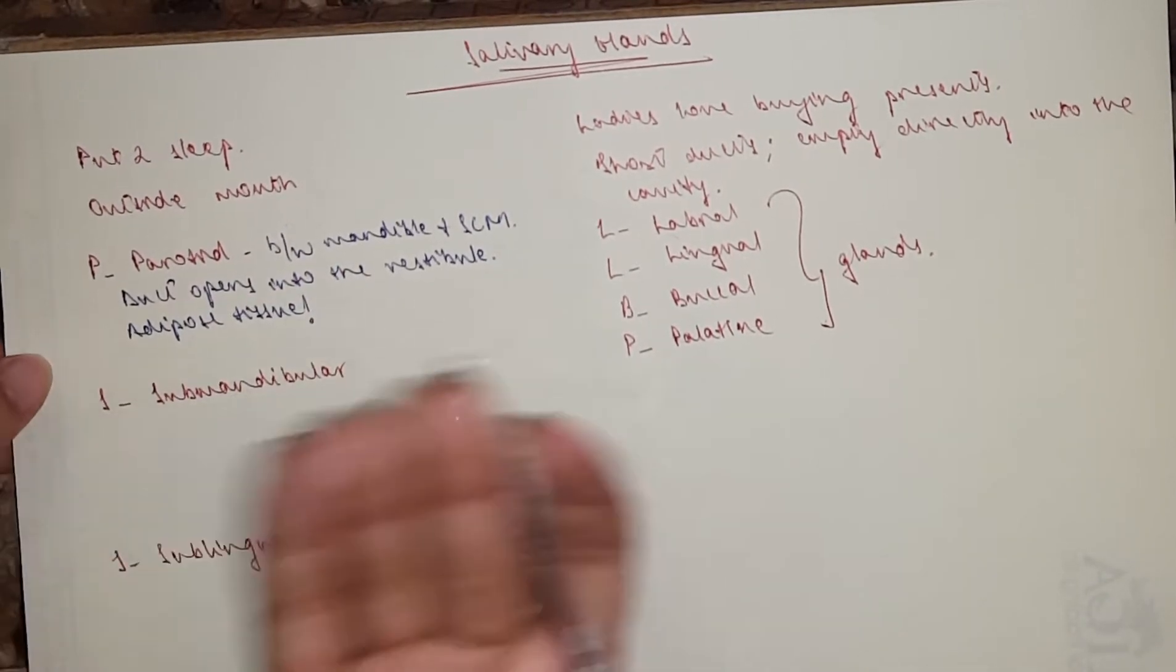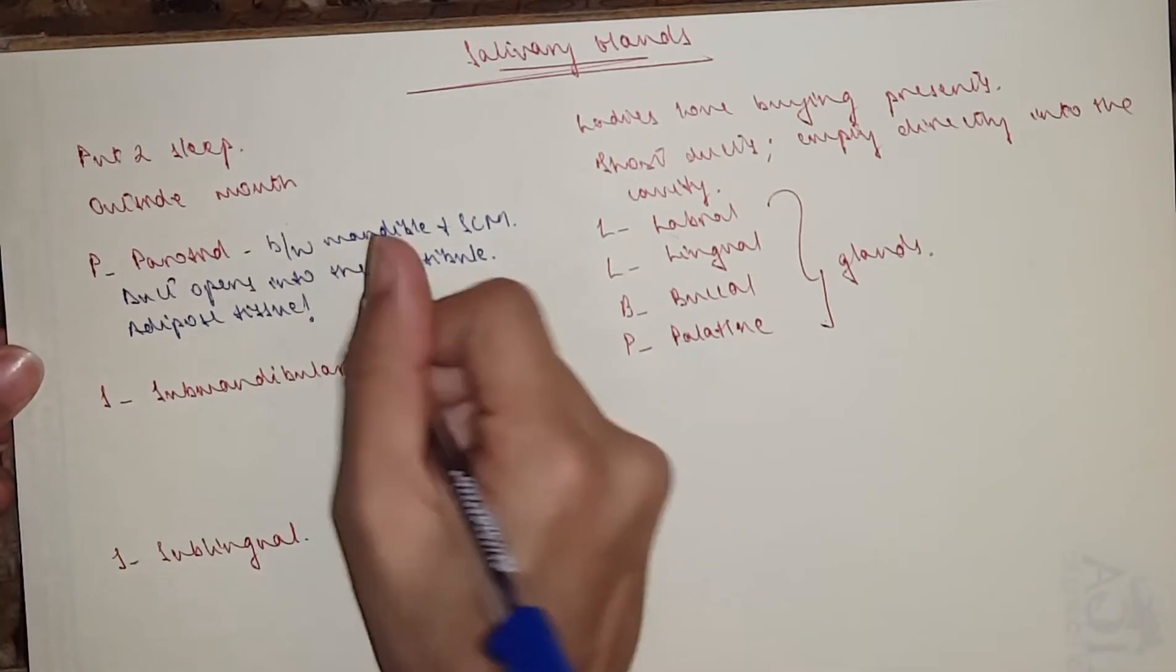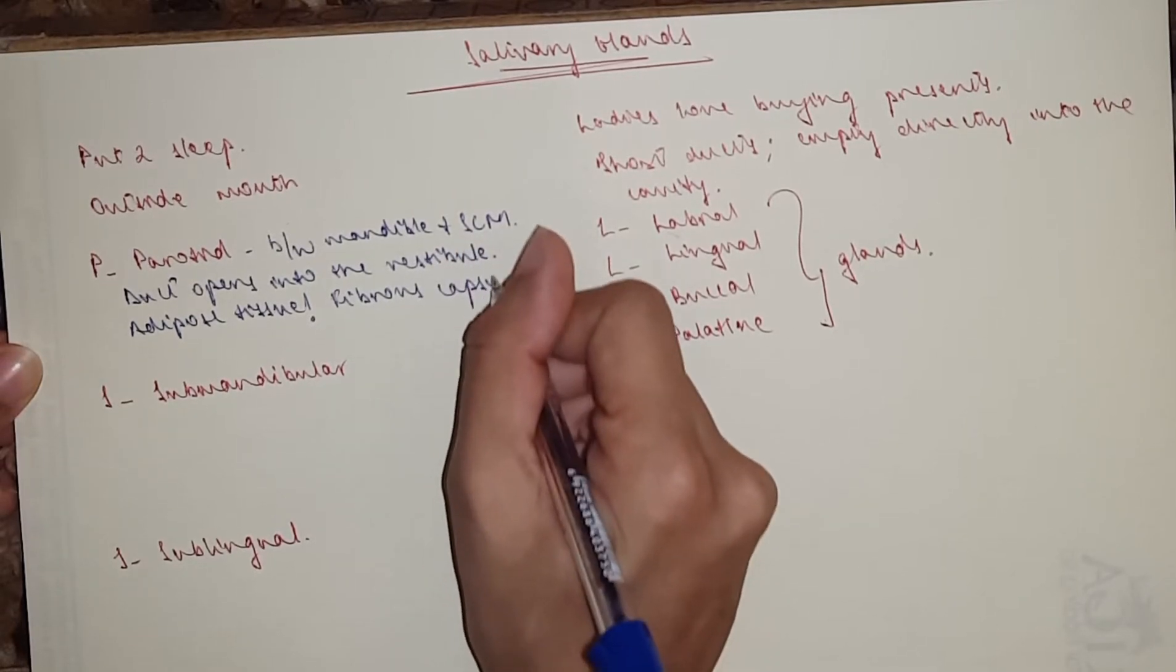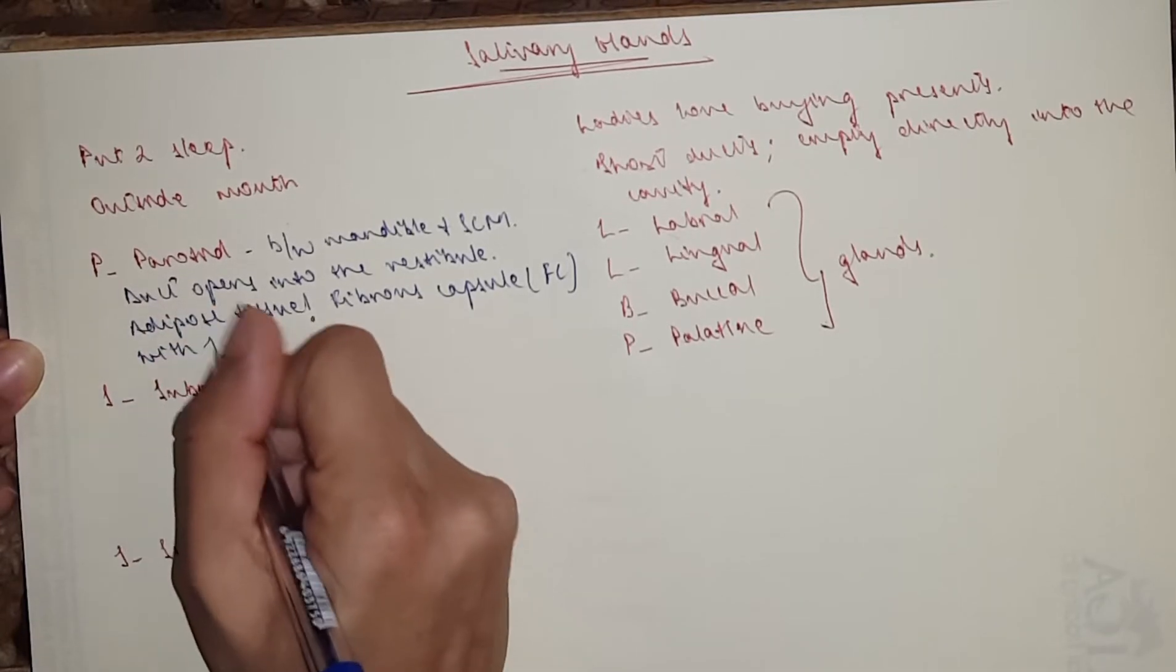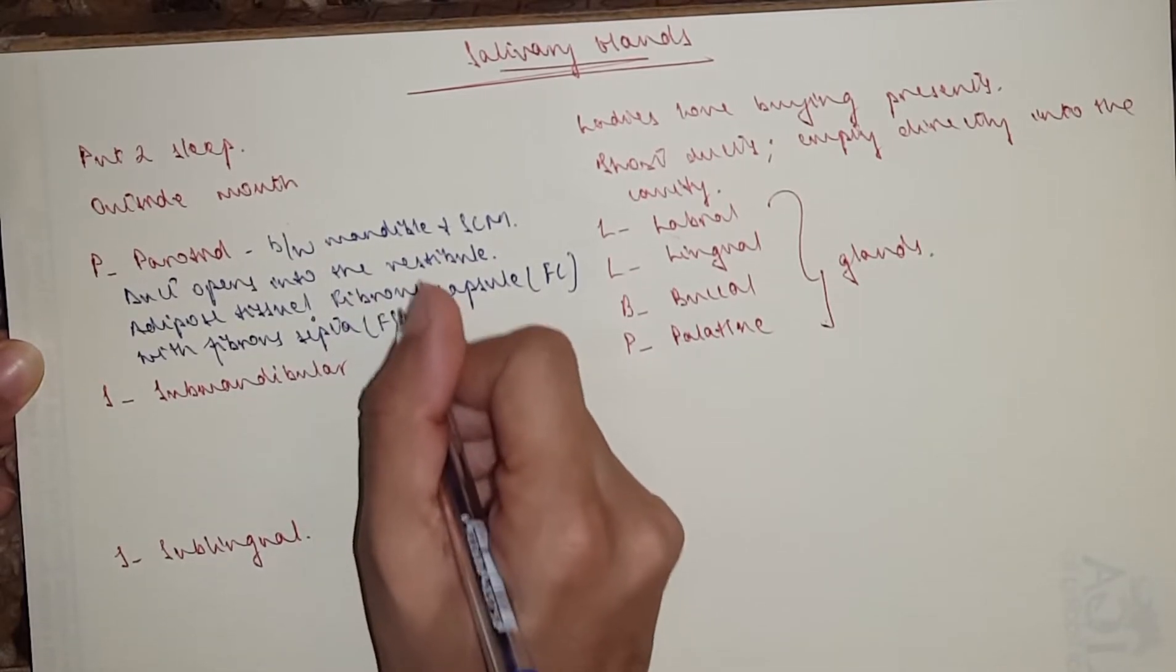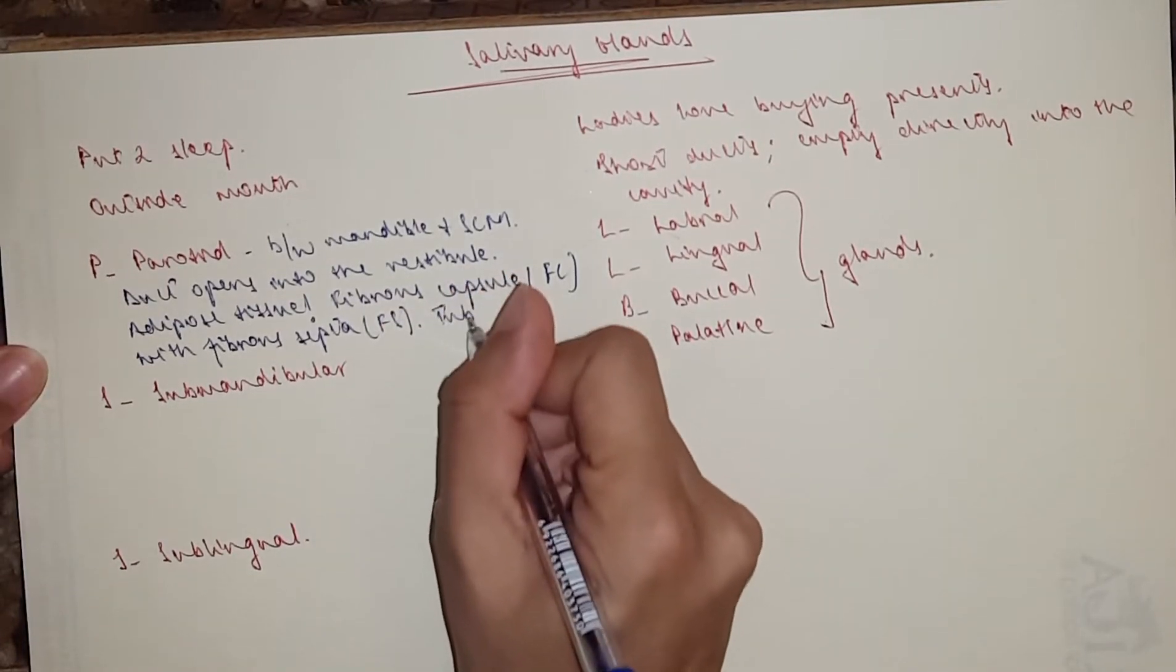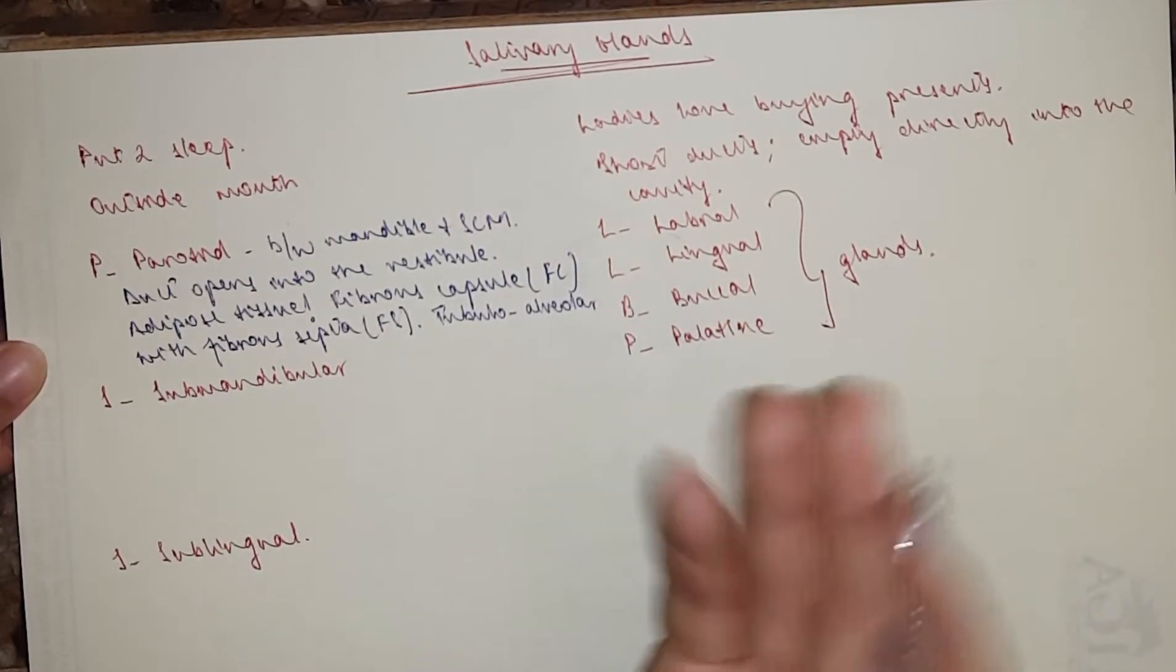Okay, and it's got a fibrous capsule with fibrous septa. So the fibrous septa divide it into lobules and lobes. So we've got a fibrous capsule, which I'm going to write as FC, with fibrous septa, which I'll write as FS.